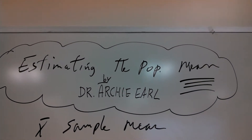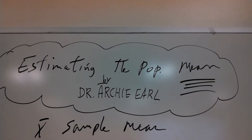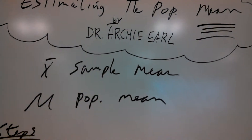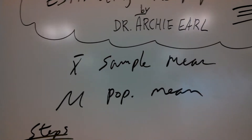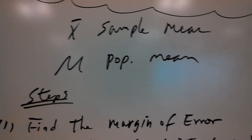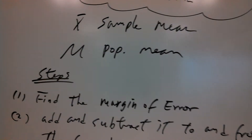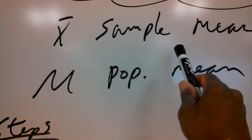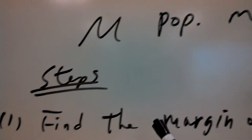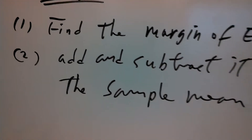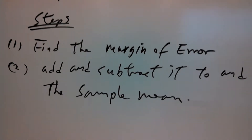This is a brief video on estimating the population mean by Dr. Archie Earle. x-bar is equal to the sample mean and mu is equal to the population mean. These are the steps involved in estimating the population mean.